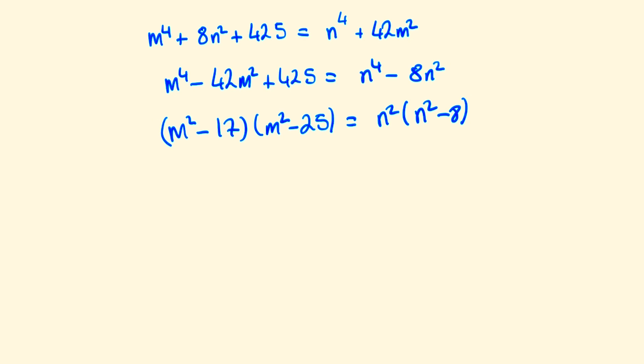Instead, how we're going to do this is we're going to complete the square on both sides, so we can write the left side as (m^2 - 21)^2 - 21^2, which is 441, and then add back in the 425.